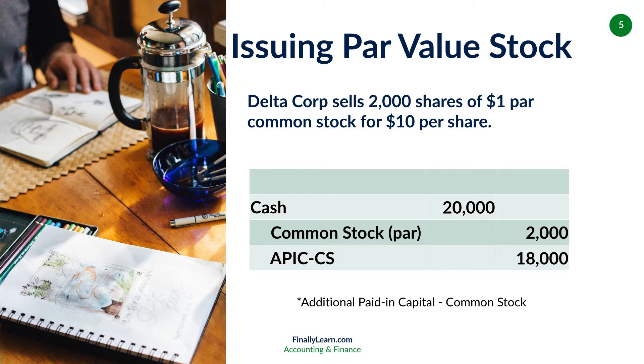Both of those are paid-in capital. They go on the balance sheet under equity. This means cash goes up, equity goes up by $20,000.